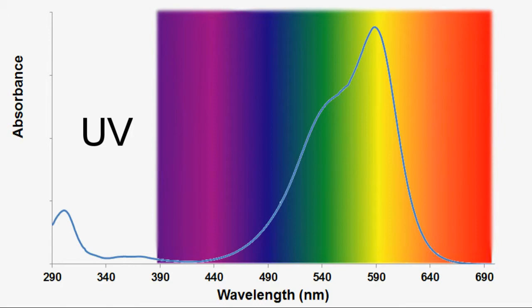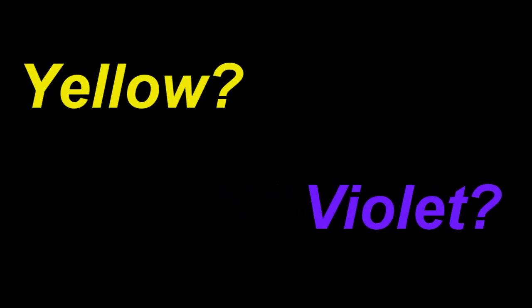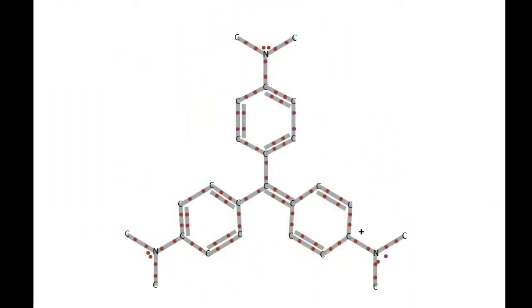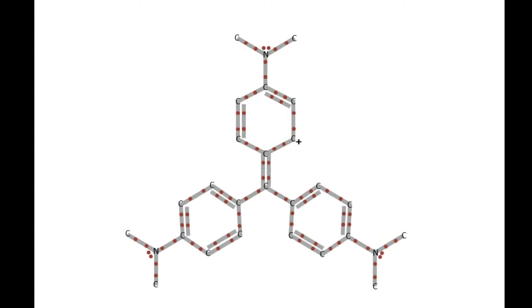If we overlay the visible spectrum onto our graph, it looks like our solution is absorbing the most light in the yellow range. If it's absorbing light in the yellow range, why is our solution violet? Well, we don't see the color the solution absorbs — we see the colors the solution doesn't absorb. Generally, we will see the complementary color of the color the solution absorbs the most, and the complementary color of yellow is violet. Now that we know why crystal violet is violet and how we can measure just how violet it is, we're ready to explore how to decolorize it.